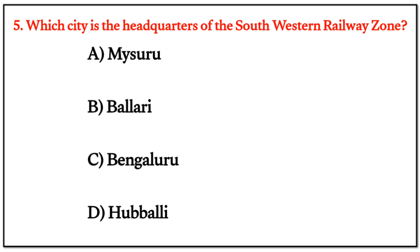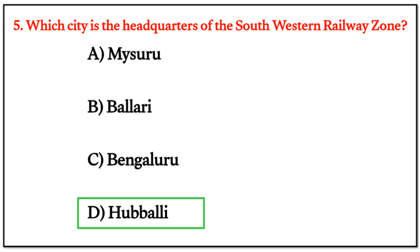MCQ Question 5: Which city is the headquarters of the Southwestern Railway Zone? The correct answer is option D — Hubli.